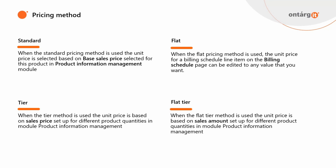Tier method — can be used if your sales price varies based on sales order quantity; the system will calculate the price depending on your sales price setup. And flat tier — can be used if your sales amount varies based on sales order quantity. For example, if you have a trade agreement that says that if the sales order quantity is between 10 to 20 pieces, the total billing amount is $5,000 for any quantity in that specific range, the flat tier pricing method is what you need.